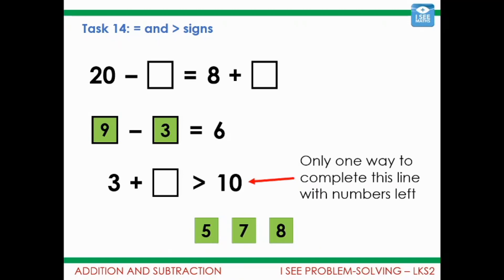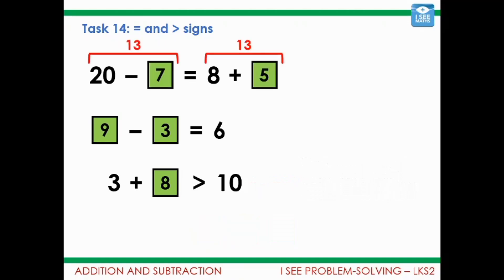Now, this line, there's now only one way to complete this line with the numbers that were left. We could have used the 9 but of course we needed it for the middle row. And it's got to be more than 10 that side. So it must be the 8. 3 plus 8 is 11. That's more than 10.